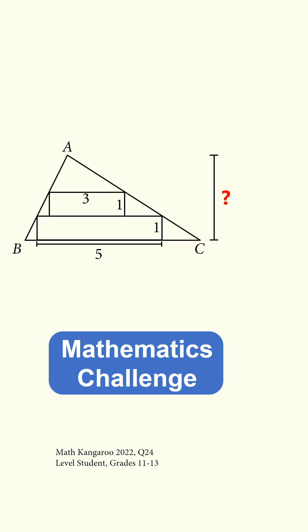Triangle ABC contains an inscribed rectangle of dimensions 5 by 1, and another rectangle of dimensions 3 by 1. What is the height of the triangle upon the base BC?